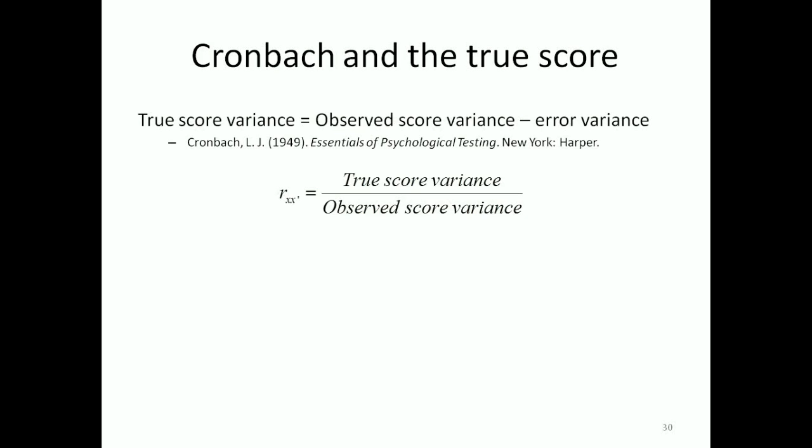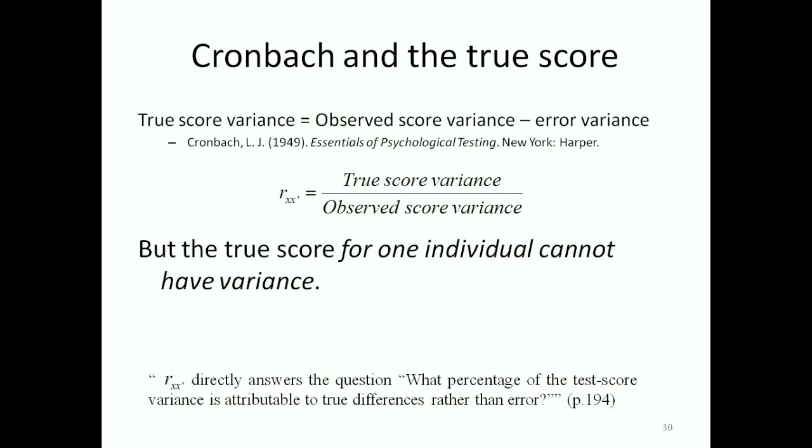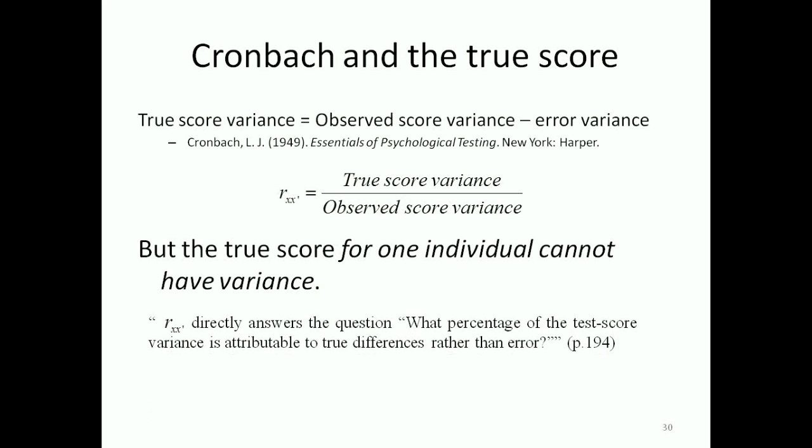But we already know that the true score for one individual cannot have variance. Cronbach goes on to state r xx' directly answers the question what percentage of the test score variance is attributable to true differences rather than error. That's on page 194.